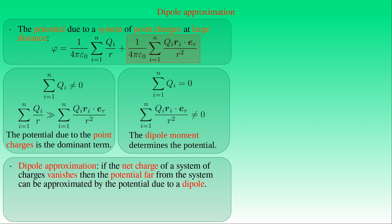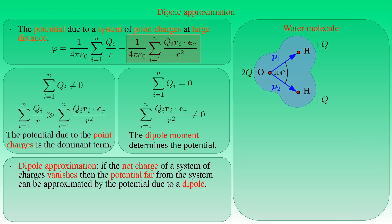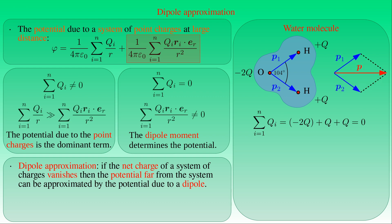The dipole approximation applies in many practical cases. For example, a water molecule consists of two hydrogen atoms and one oxygen atom with bond angle ~104°. Because oxygen is more electronegative, each hydrogen atom has a positive partial charge q while the oxygen atom has charge −2q, making the molecule electrically neutral at large distance. However, the vector sum of the electric dipole moments gives a non-vanishing dipole moment — water is a polar molecule and its electric potential can be described by dipole approximation.